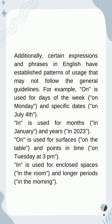Additionally, certain expressions and phrases in English have established patterns of usage that may not follow the general guidelines. For example, 'on' is used for days of the week — 'on Monday' — and specific dates — 'on July 4'. 'In' is used for months — 'in January' — and years — 'in 2023'.